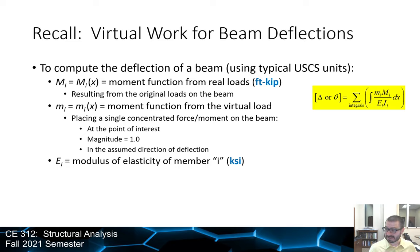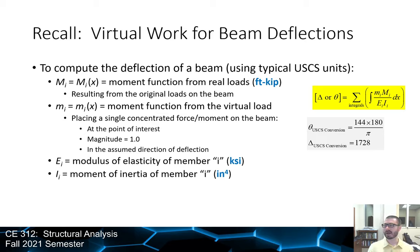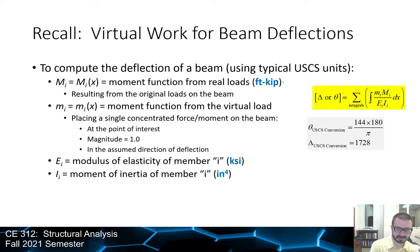E is the modulus of elasticity, the Young's modulus, and I is the moment of inertia. The units are not consistent, so we need a conversion factor. For rotations the conversion factor is 144; to convert to degrees, use 144 times 180 over pi. For deflections, use 1728. As long as everything is expressed in those units, we should be good.